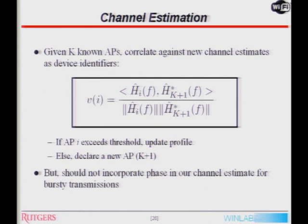One interesting observation about the real world is that things that work in MATLAB don't necessarily work in practice. We realized our method wasn't working because we were utilizing phase in the equation. In a real-world system where an access point transmits a burst at one time and then at some other point later, there are two reasons why phase shouldn't be used. One is that the DSP implementation may or may not mandate that the beacon frame starts at the same initial phase. Additionally, the local oscillator itself is going to be at a different position, resulting in an offset of the initial transient phase. So even if the channel is the same, the phase is not.